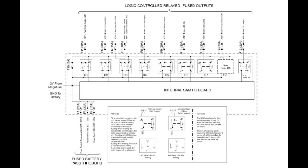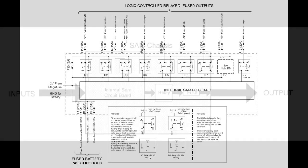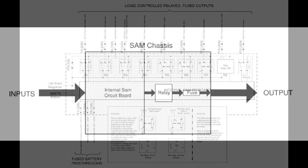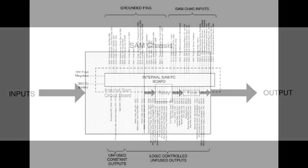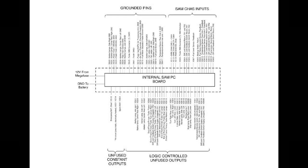Most of its outputs are logic-controlled relays. They're controlled with FETs, or field-effect transistors. Outputs are then typically fuse-protected. When they're not fused, they're monitored and turned off when they go overcurrent. It can also broadcast fault codes when there's a problem with a number of these components or circuits.